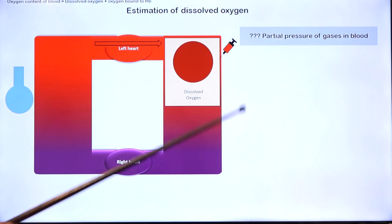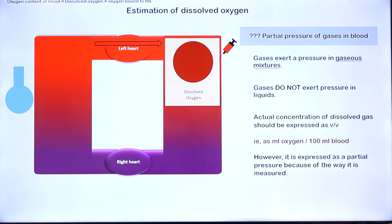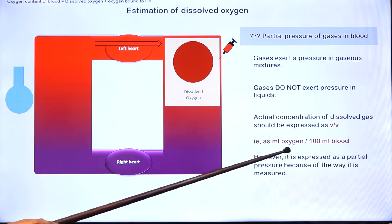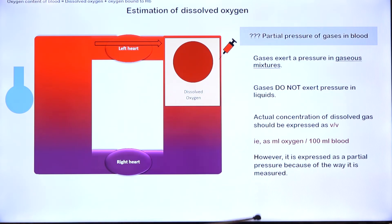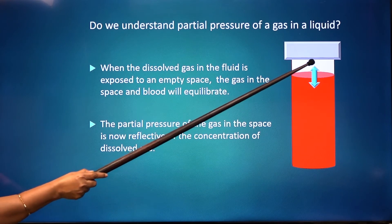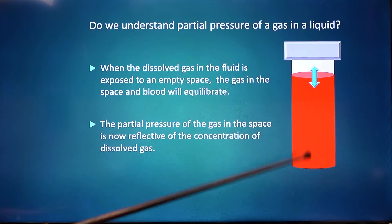To reiterate what we mean by partial pressure of gases in blood: gases exert a partial pressure only in gaseous mixtures — they do not exert a pressure in liquids. The actual concentration of dissolved gas should be expressed as milliliters of the gas per unit volume of liquid. However, we express dissolved oxygen in blood as a partial pressure because of the way it is measured: the gas is allowed to equilibrate with a small gaseous space, and the partial pressure in that space is reflective of the concentration of the dissolved gas.